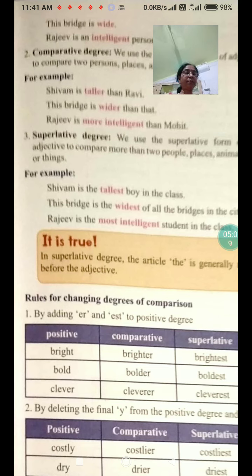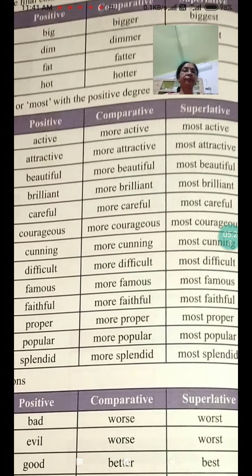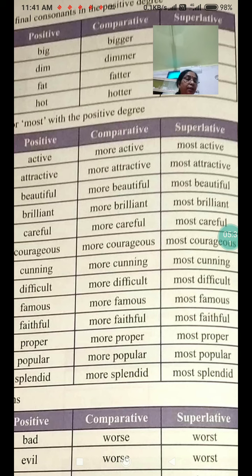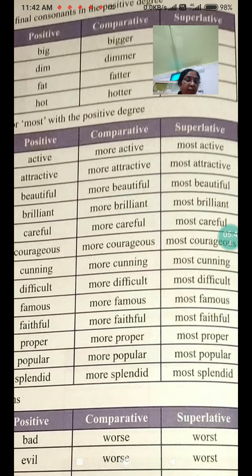How do we change degrees of comparison? By adding -er and -est to the positive degree: bright, brighter, brightest. By deleting the final Y and adding -ier and -iest: costly, costlier, costliest. By doubling the final consonant: big, bigger, biggest. By using more and most with the positive degree: active, more active, most active.